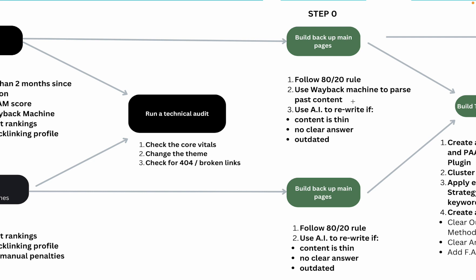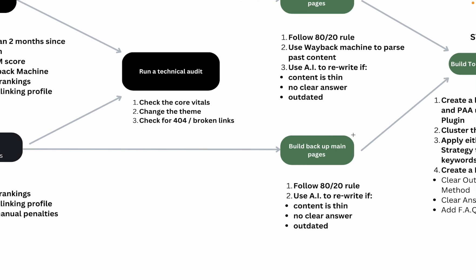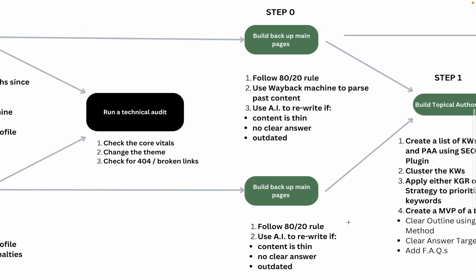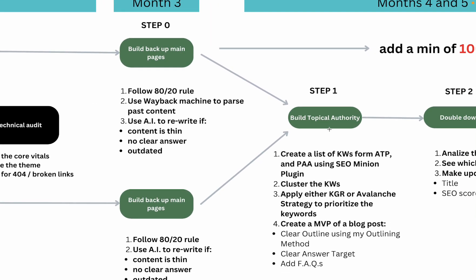Honestly, I would just rewrite it — AI tools are dirt cheap, especially for mass production. Use AI to check whether content is thin (only a few words, doesn't answer the question clearly), lacks a direct answer target, or is outdated (like 'best X in 2020' needing a year update). For the aged domain, you won't use the Wayback Machine, but the 80/20 rule still applies. If content is thin, doesn't answer the question directly, or is outdated, rewrite it. I personally use Jasper, but tools like Koala, Wordplay, or Autoblogging work too.